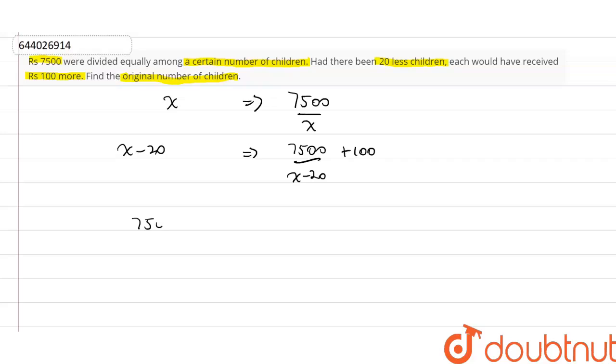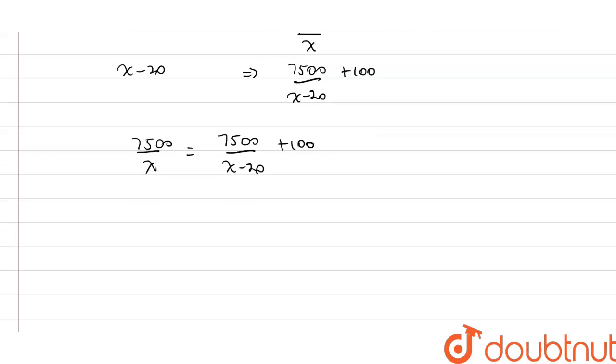So, we have 7500 divided by x is equal to 7500 divided by x-20 plus 100. Now let us solve this equation.